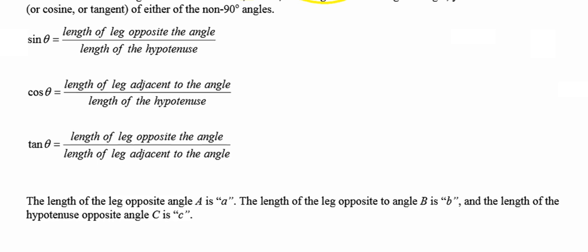The sine ratio — in this particular case, we're indicating which angle we're finding that sine ratio for. This is the Greek letter theta. Sometimes it will be thought of as angle X, sometimes as angle A. The sine of any angle theta is going to be equal to the ratio between the length of the leg opposite that angle and the length of the hypotenuse. So sine is the opposite side compared to the hypotenuse.